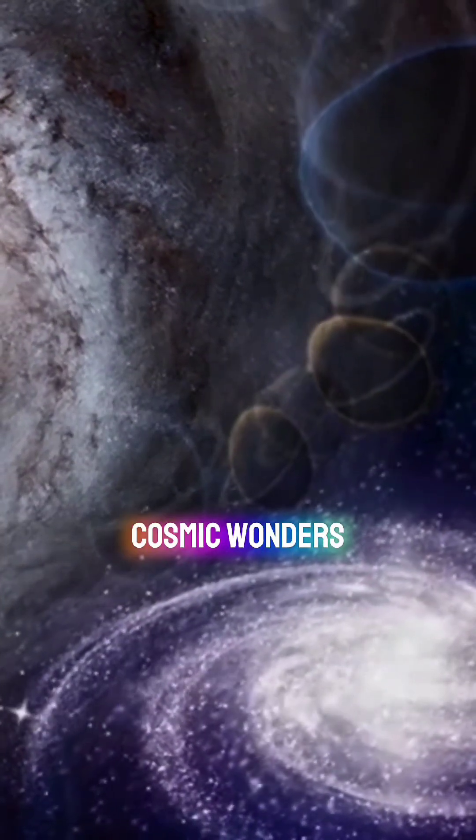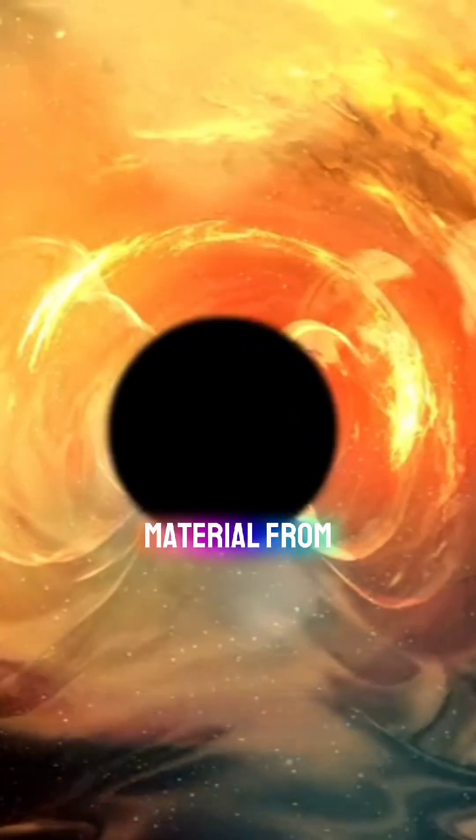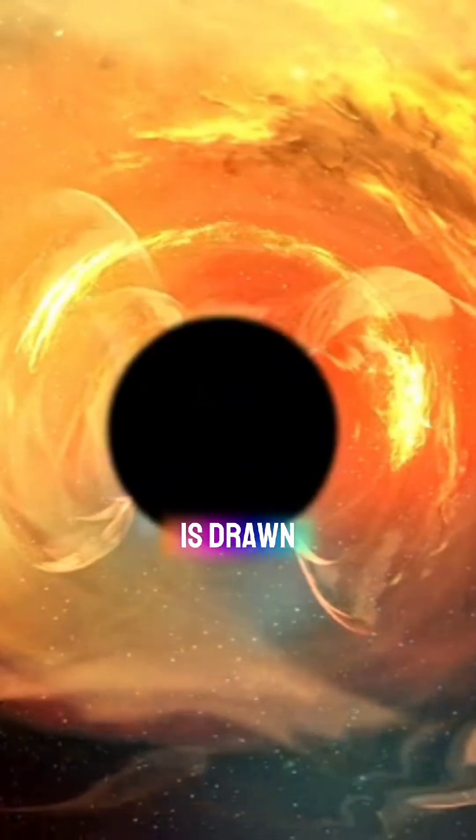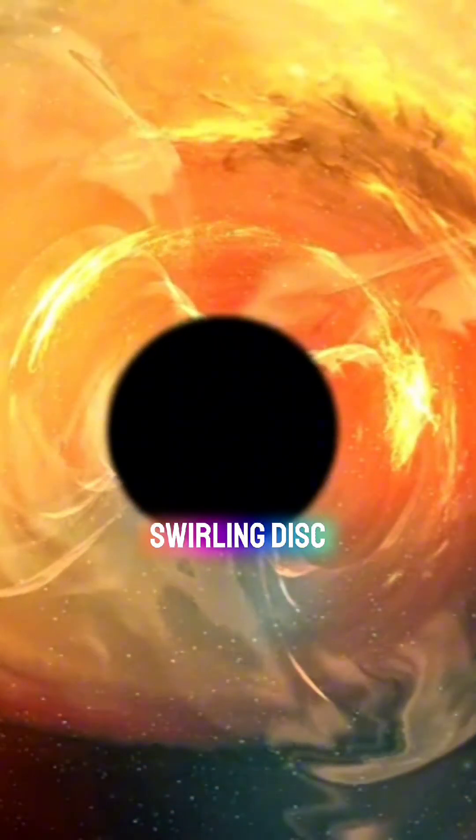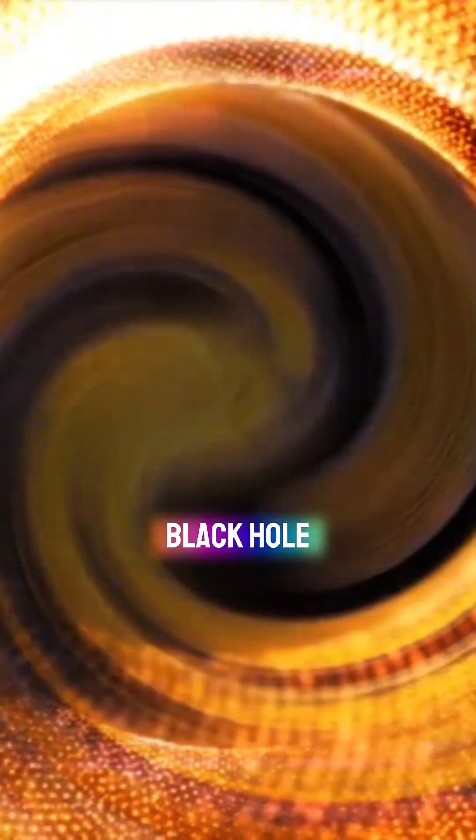So, how do these cosmic wonders operate? Material from the surrounding environment is drawn towards the black hole, forming a swirling disk of gas and dust known as an accretion disk. As this material spirals towards the black hole,